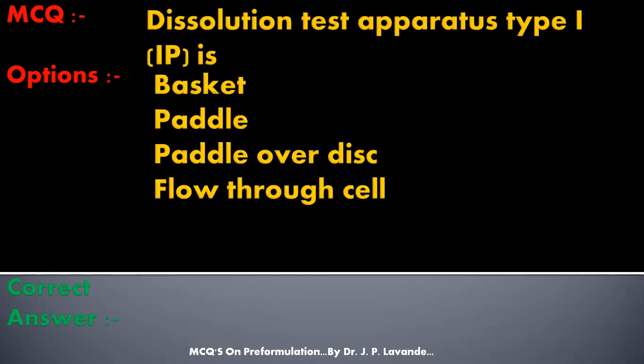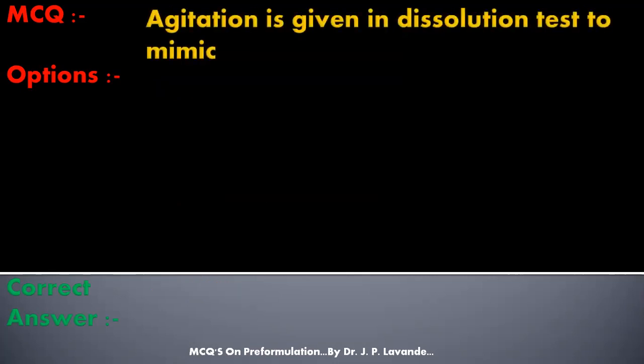Next multiple choice question: Dissolution test apparatus Type 1 (USP) — options: Basket, Paddle, Paddle over disk, Flow-through cell. Correct answer is Basket. Dissolution test apparatus Type 1 USP is the basket.